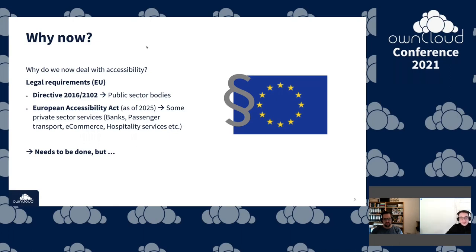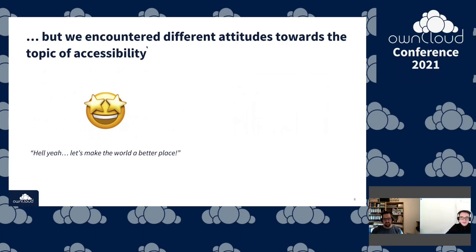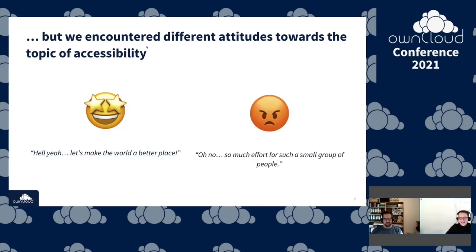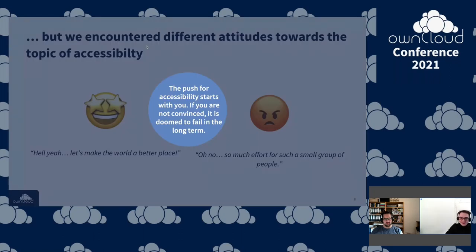Accessibility needs to be done, but we encountered very different attitudes toward implementing it. On one hand, people say 'Hell yeah, let's make the world a better place.' On the other hand, there are voices saying 'Oh no, that's a lot of effort for such a small group of people.' This is very common in online communities. The problem is that the push for accessibility really starts with you — if you're not convinced, the whole project is doomed to fail because it's a long-term project.